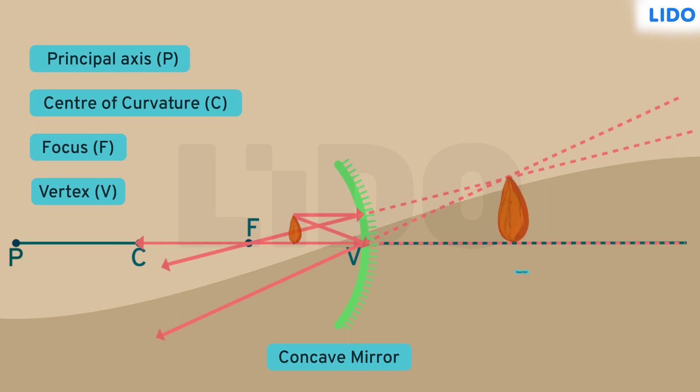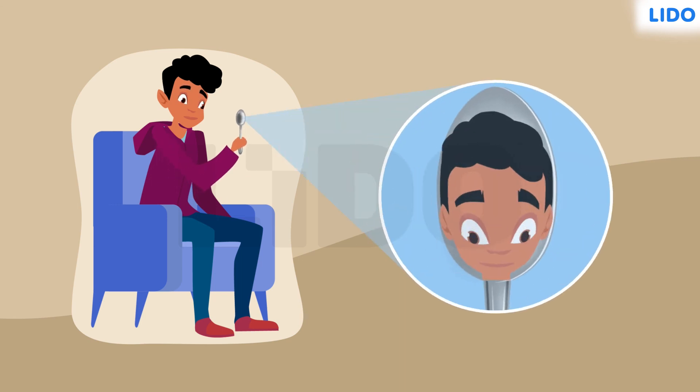This image is magnified. A dentist also uses a concave mirror to achieve the same. Rohan quickly took out a newly bought spoon. Holding the spoon right in front of his face, Rohan observed that even his eyebrows were looking very thick and long.